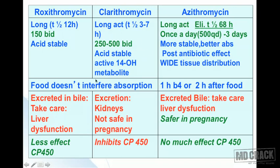Roxithromycin and clarithromycin are acid stable. Clarithromycin forms an active 14-hydroxy (14-OH) metabolite. Azithromycin is more stable, better absorbed, and produces a post-antibiotic effect — even with lower plasma concentrations, it maintains longer tissue concentrations due to wide tissue distribution. For roxithromycin and clarithromycin, food does not interfere with absorption; azithromycin should be taken one hour before or two hours after food. Roxithromycin is mainly excreted in bile, so caution is needed with liver dysfunction.